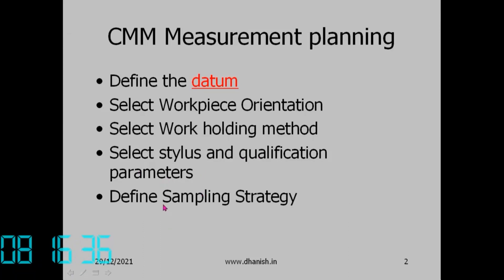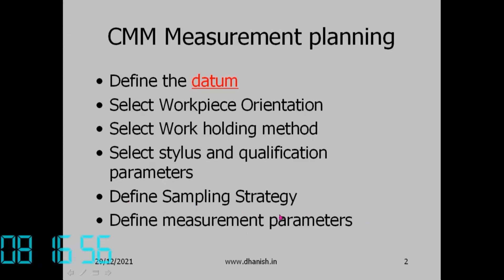Then define the sampling strategy. We have to take samples on the surface; we cannot take an infinite number of points. So we have to select a certain number of points on the surface — how do we select that? That is called sampling strategy.